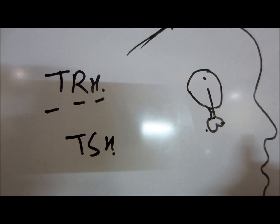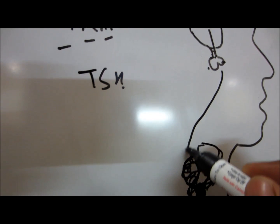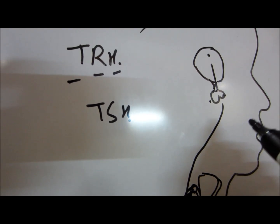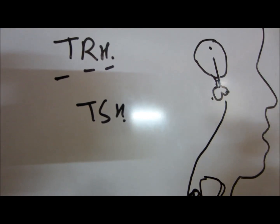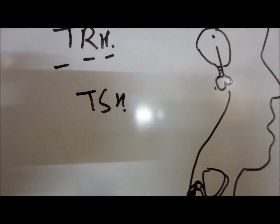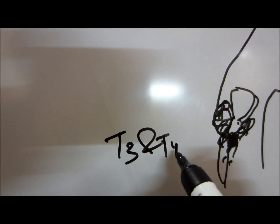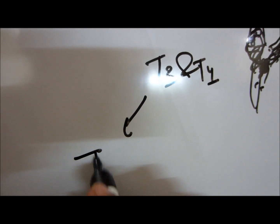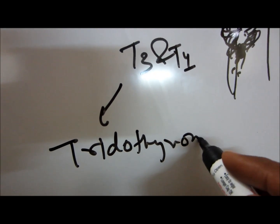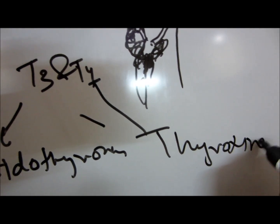So this TSH stimulates the thyroid to release out its hormone, to release T3 and T4. T3 is known as triiodothyronine and T4 is thyroxine.